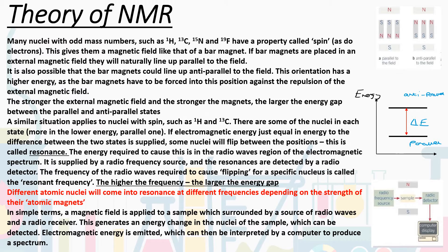This gives them a magnetic field like that of a bar magnet. A really simple analogy for thinking about spin is to think of it as essentially looking like a bar magnet. Now, if I take bar magnets and I place them into an external magnetic field, they will line up naturally parallel to that field.